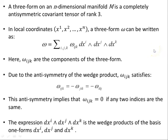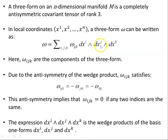A three-form on an n-dimensional manifold M is a completely anti-symmetric covariant tensor of rank 3. In local coordinates x1, x2, xn, a three-form omega can be written as omega equals sigma ijk, omega ijk, dxi wedge dxj wedge dxk.